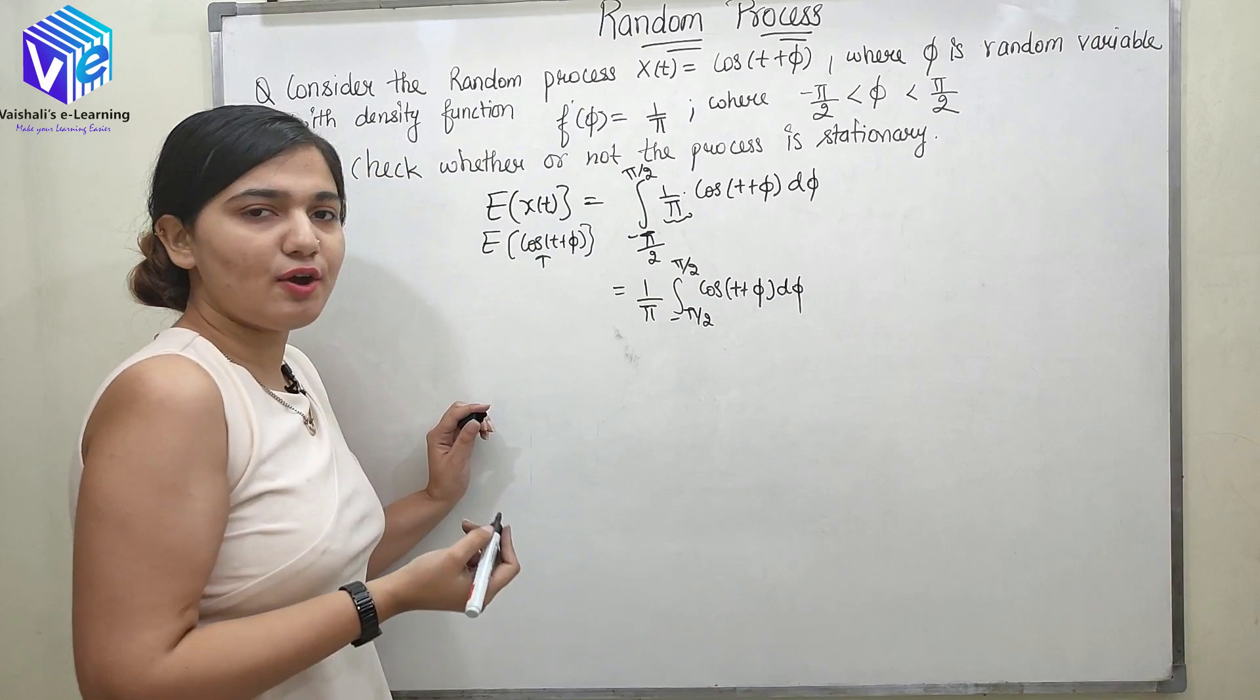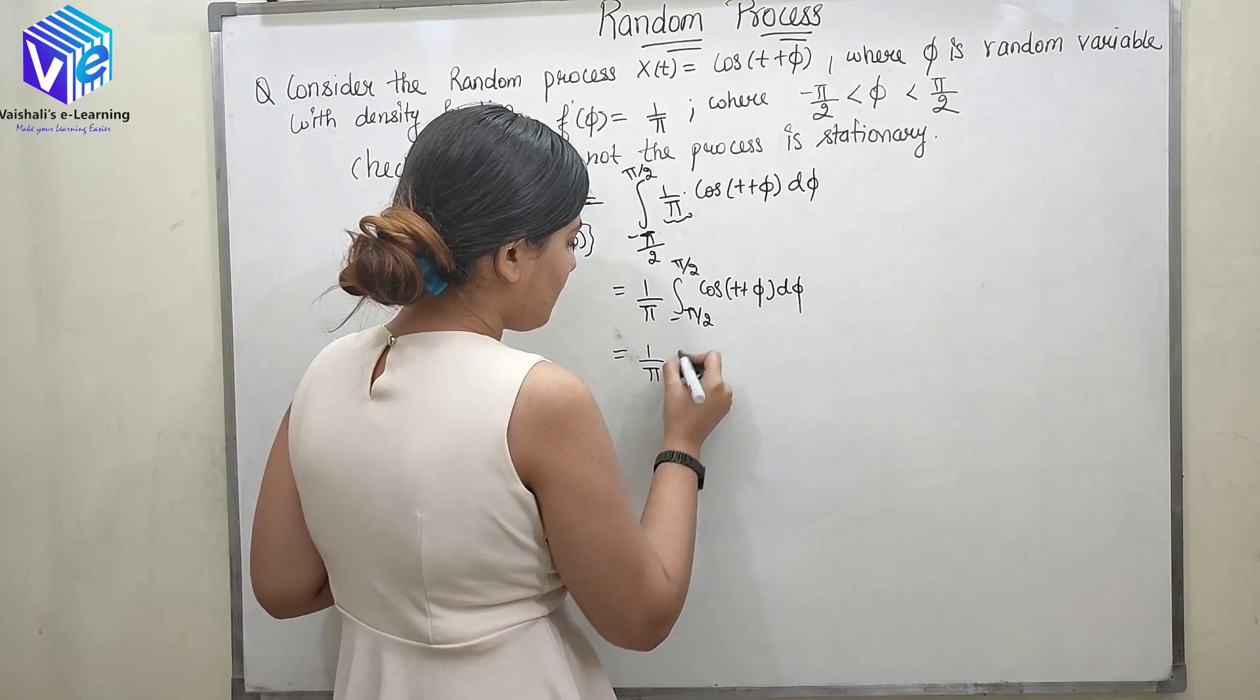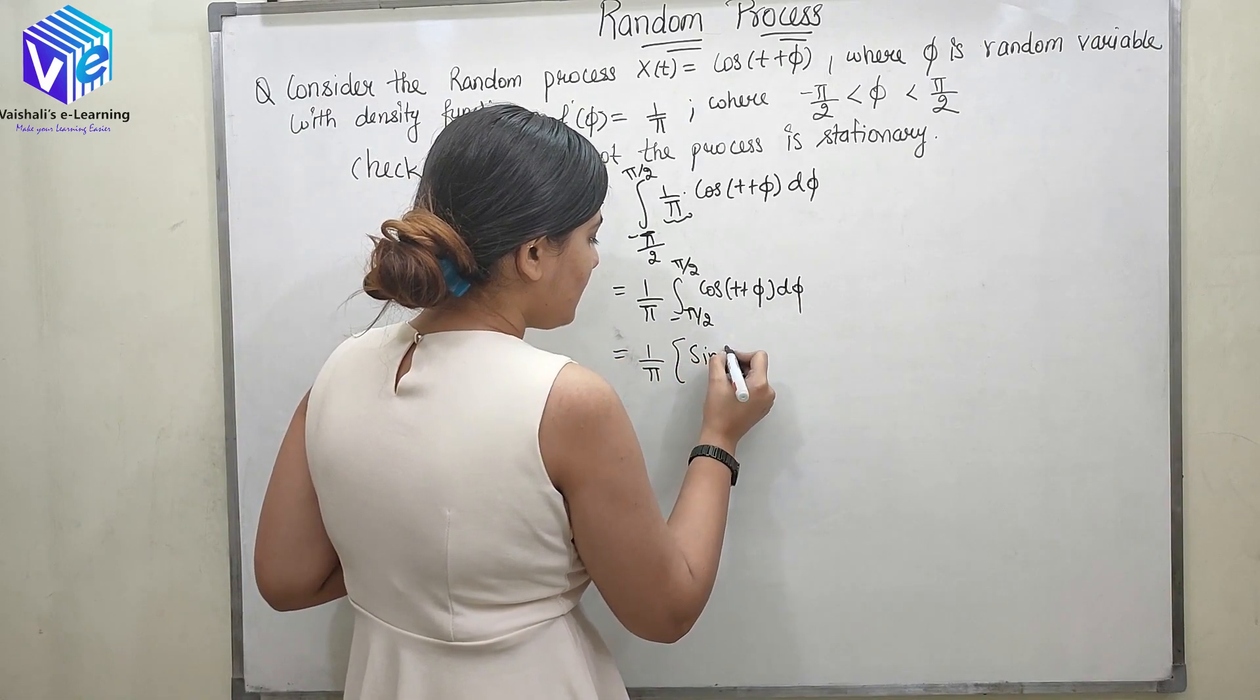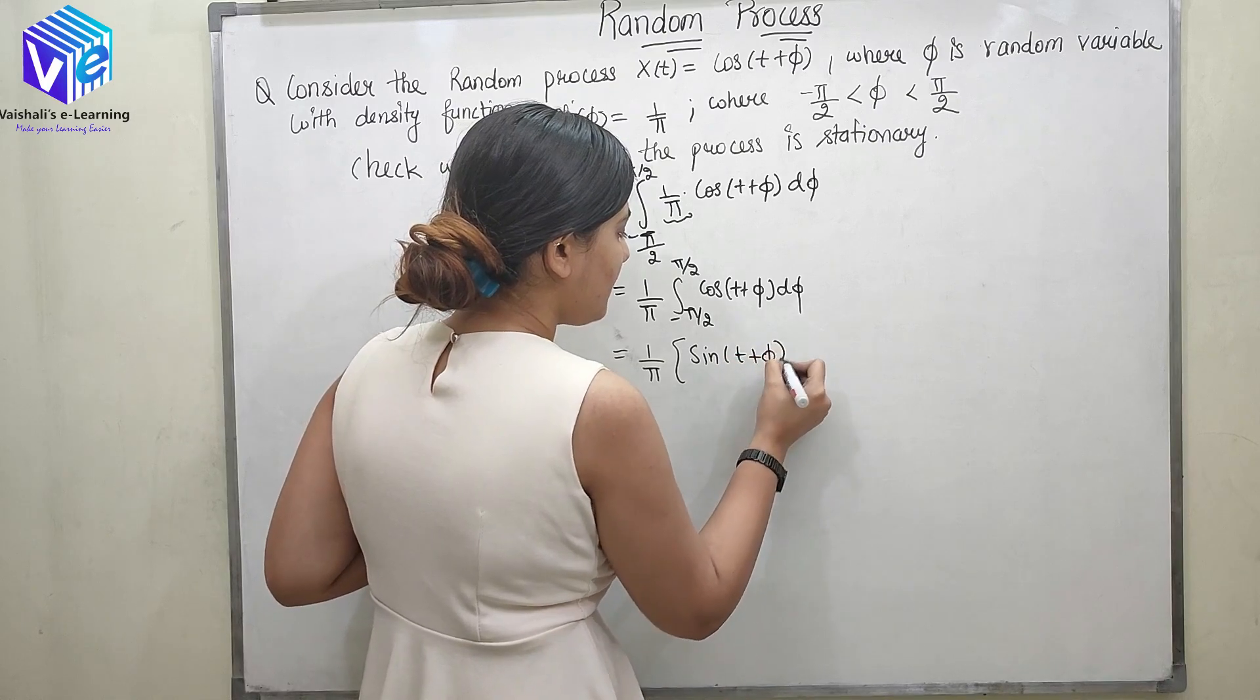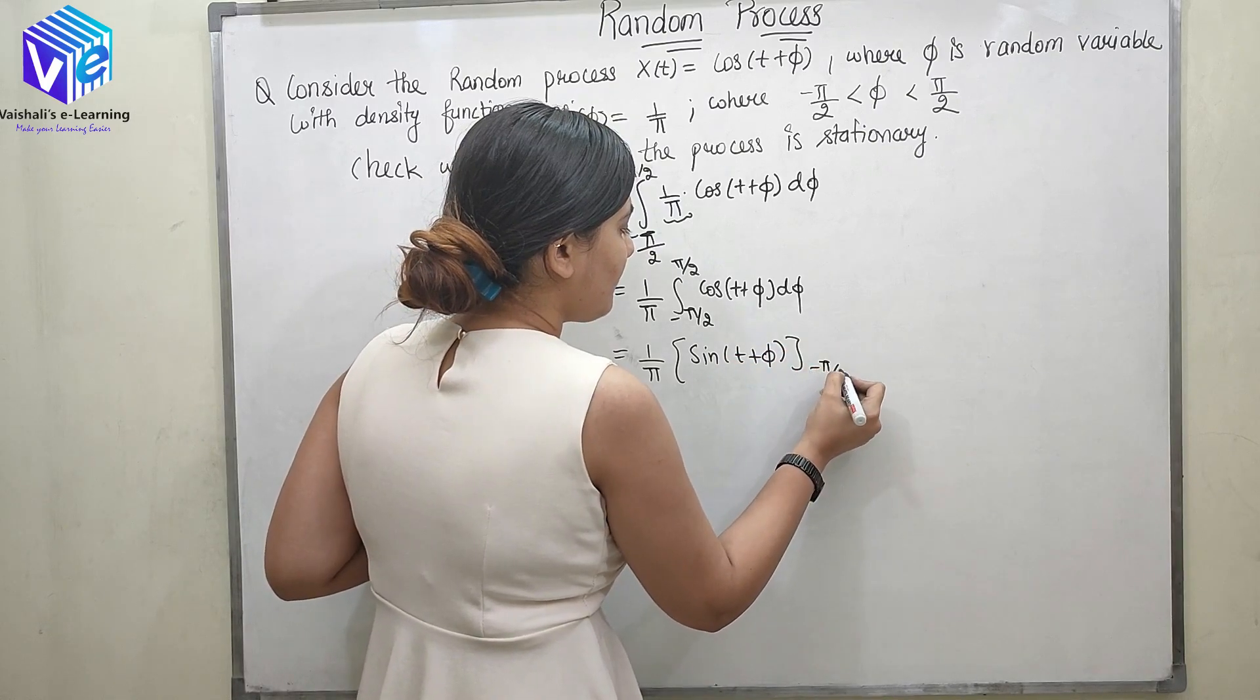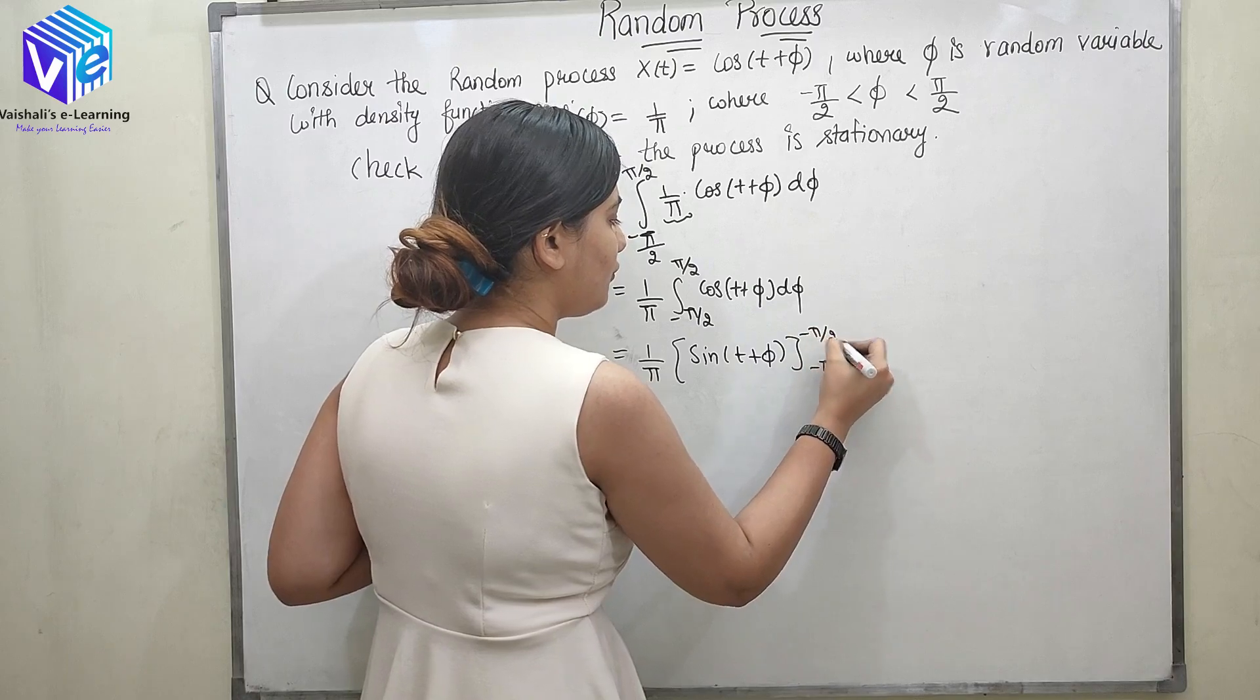Now the integration of cos is sine. So now it is 1/π sine(t + φ). The limits are from minus π/2 to π/2.